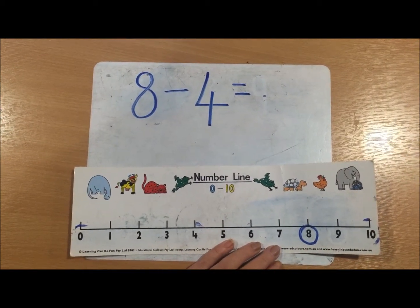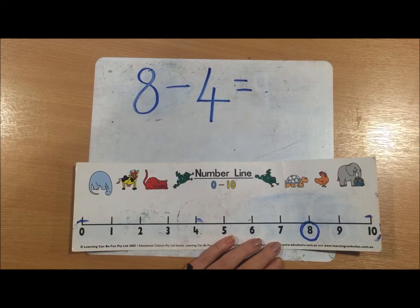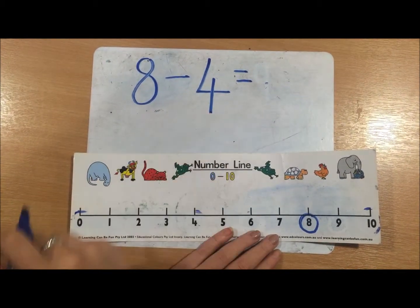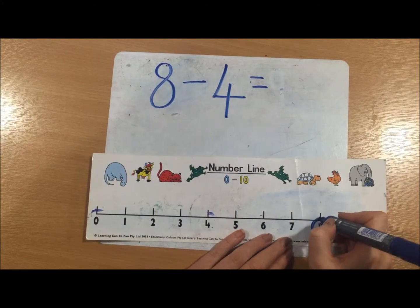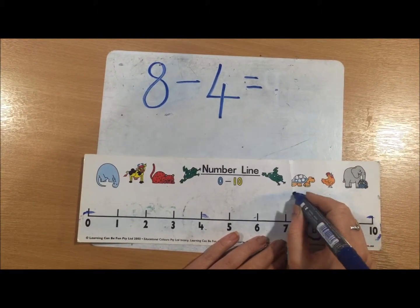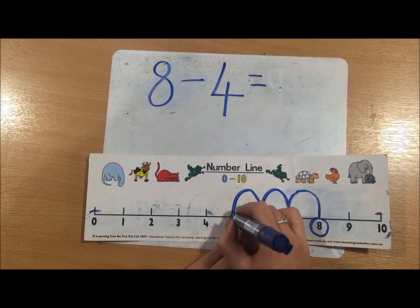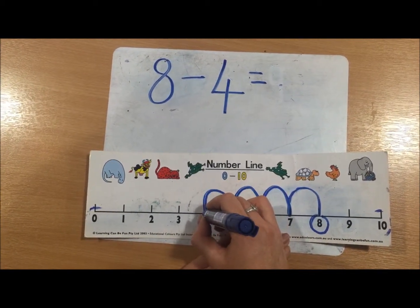Once you have circled the biggest number, we then jump down the number line using the smaller number, and the smaller number is 4. So we're going to jump backwards: 1, 2, 3, 4.